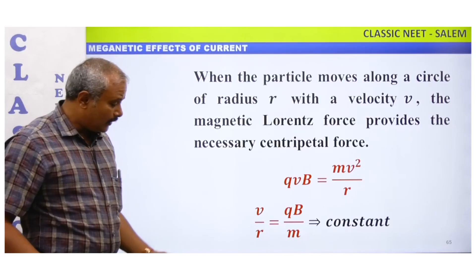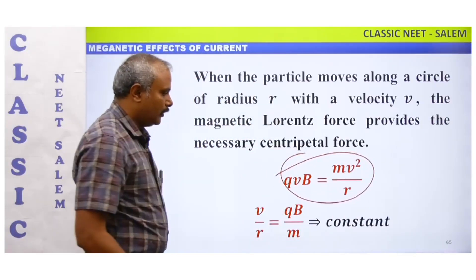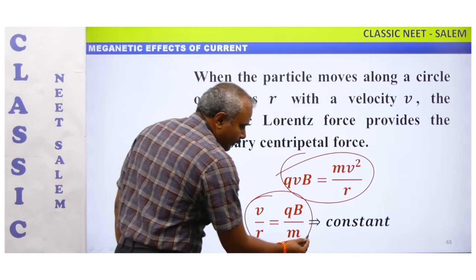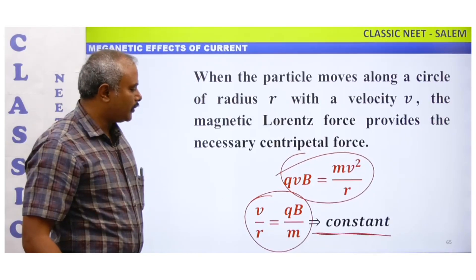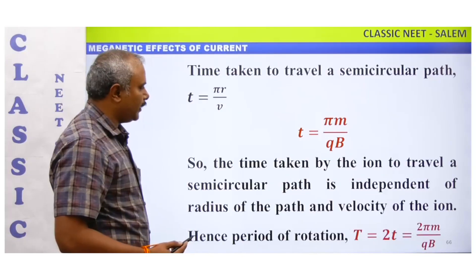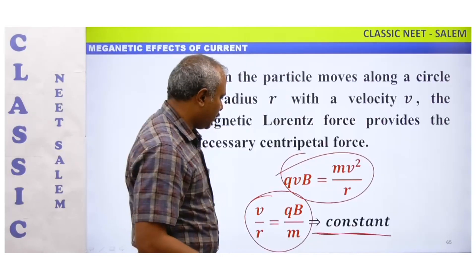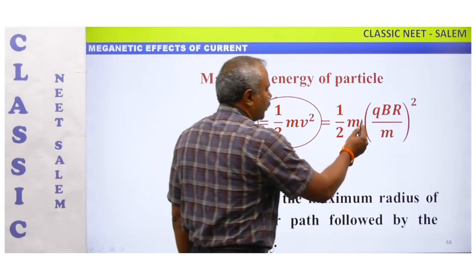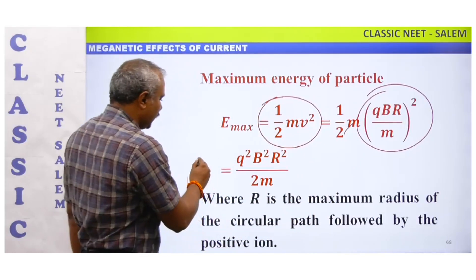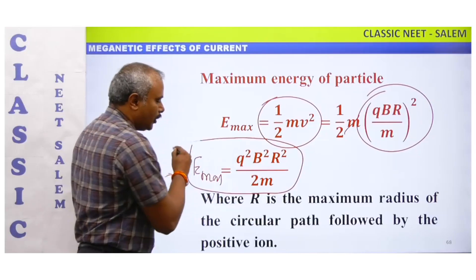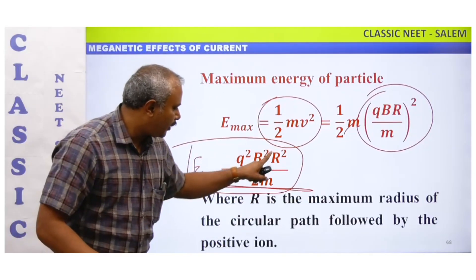The force equation is: qvB = mv²/r. From this, v/r = qB/m, a constant. So v = rqB/m. For kinetic energy: ½mv² = ½m(qBr/m)² = q²B²r²/2m. The maximum energy of the cyclotron is: E_max = q²B²r²/2m. This is the cyclotron maximum energy formula.